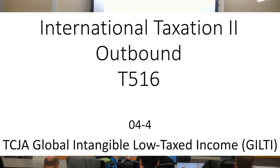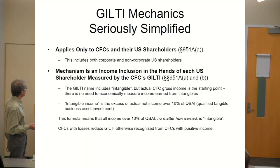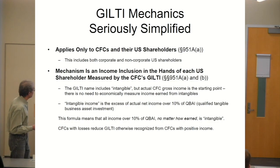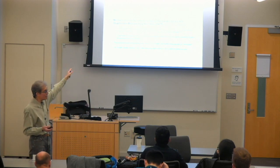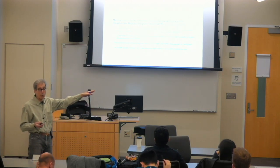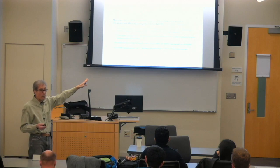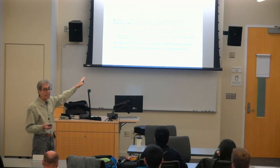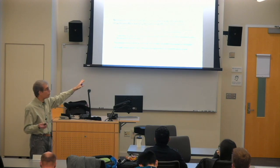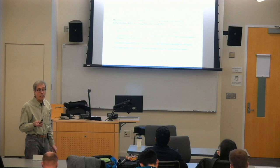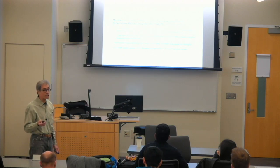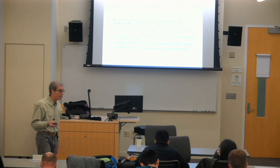Now we'll start talking about GILTI. The first point is that GILTI only applies to CFCs and their U.S. shareholders. If we have an example of where an individual owned 40% of a foreign company and some other foreign person owned 60%, that's not a CFC. The CFC definition we're talking about when we talk about GILTI is the same CFC definition we know and love from subpart F.